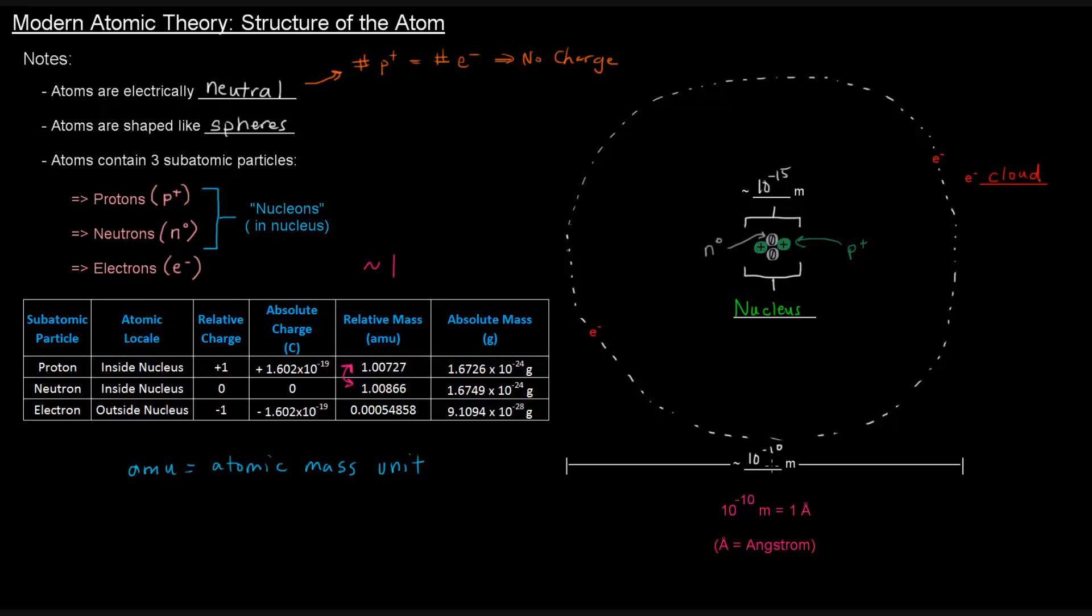So what does this kind of mean? Well, 10 to the negative 10 versus 10 to the negative 15, that means that the diameter of the entire atom is about 100,000 times the size of the nucleus. That's kind of insane. So what that means is that this area outside the nucleus really is mostly empty space. The analogy that some people like to use is that if you put a marble in the middle of a football stadium or a soccer stadium, the marble would represent the nucleus, the space outside of it would be the space where the electrons can flow. So it's really mostly empty space.